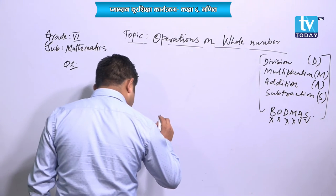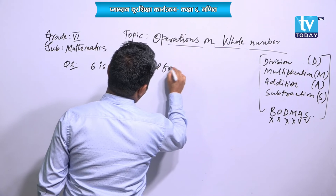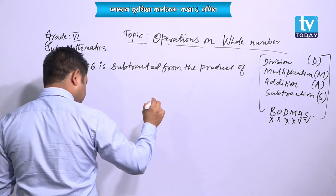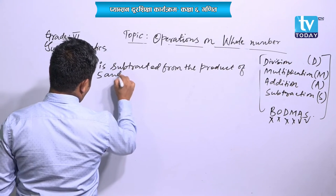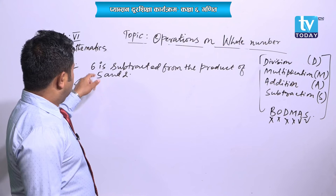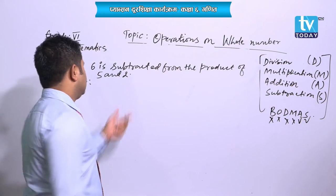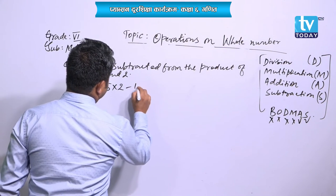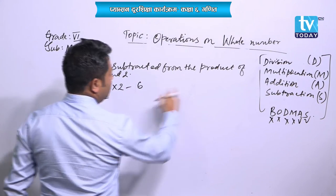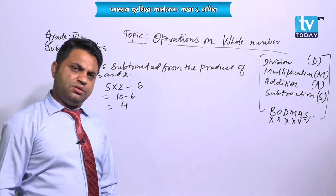Question number 3: 6 is subtracted from the product of 5 and 2. So: 5 into 2 minus 6. You have to follow the rule — first multiplication: 5 twos are 10. Then subtraction: 10 minus 6 is 4.